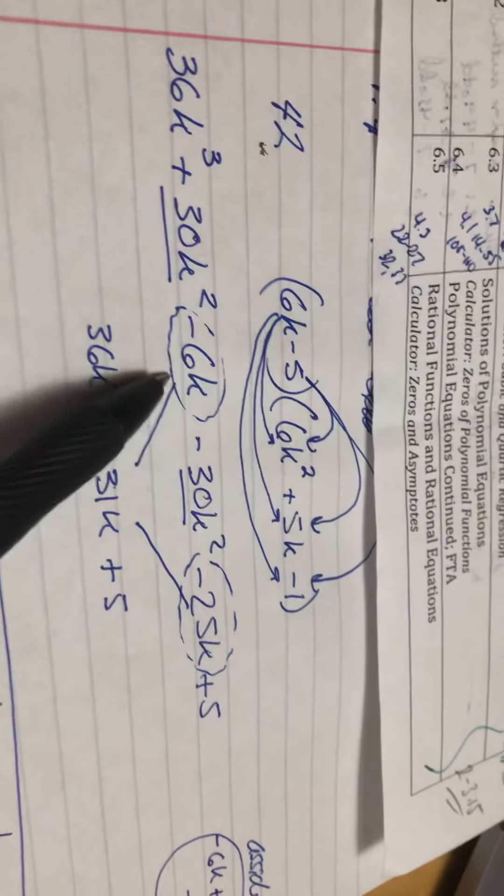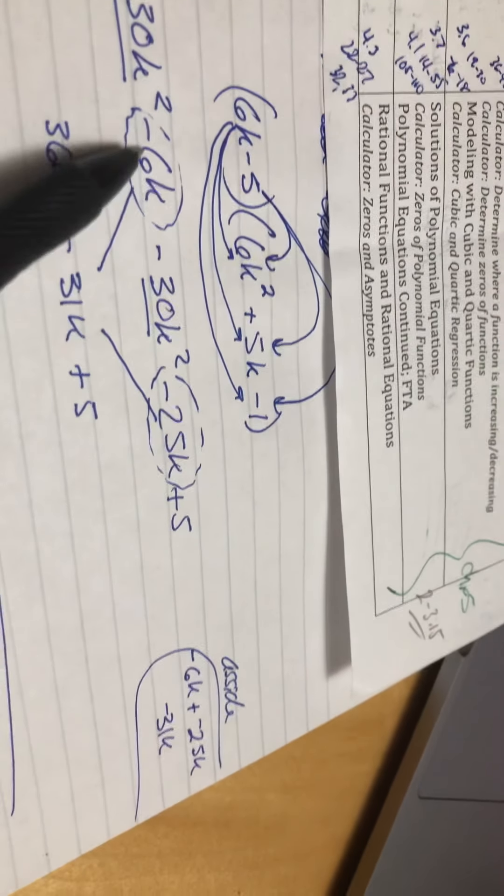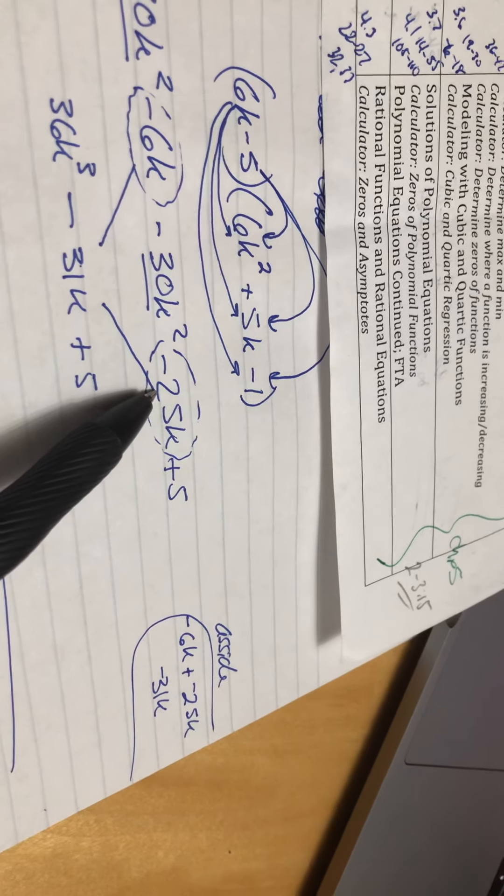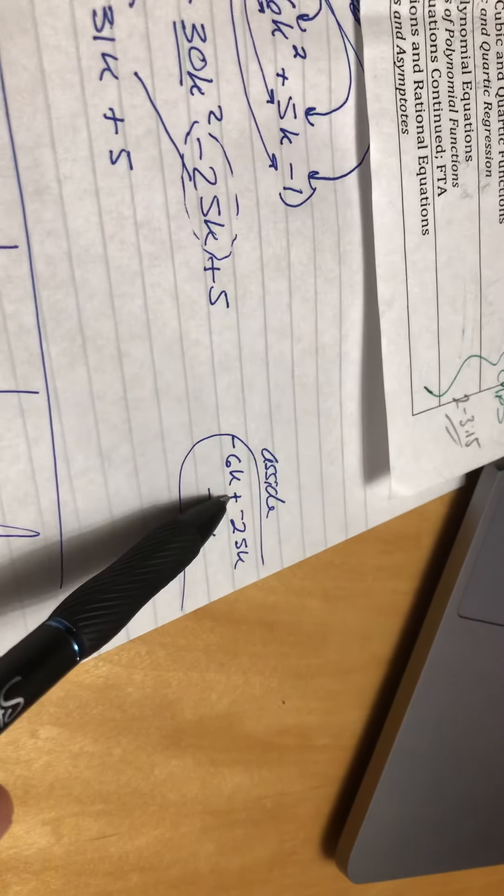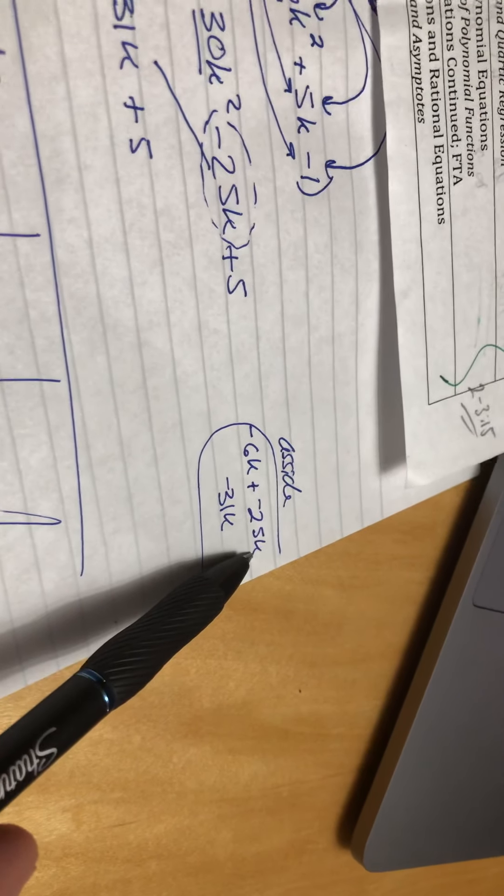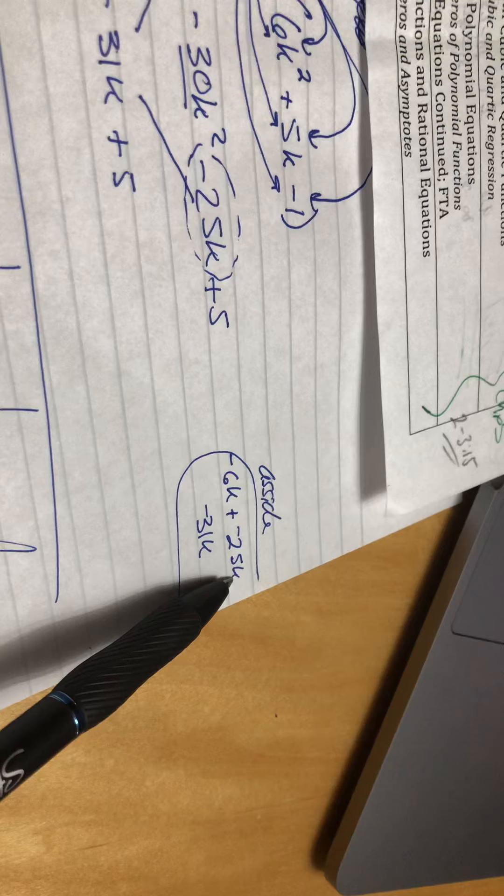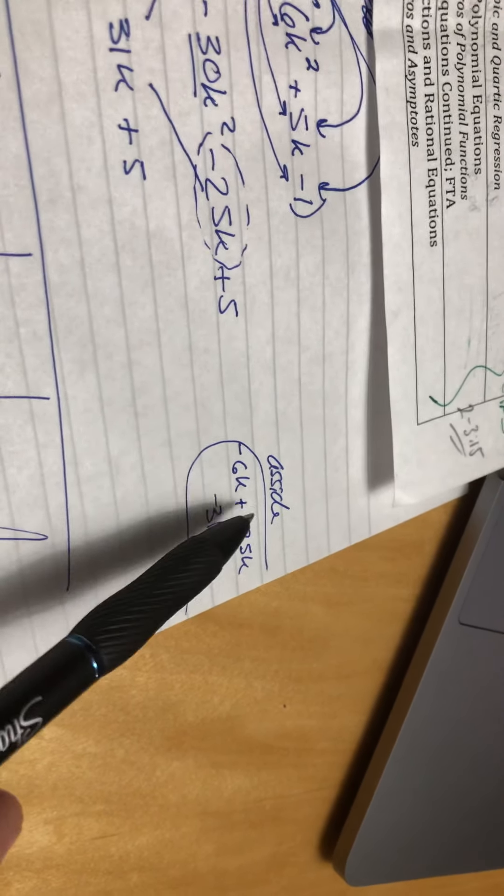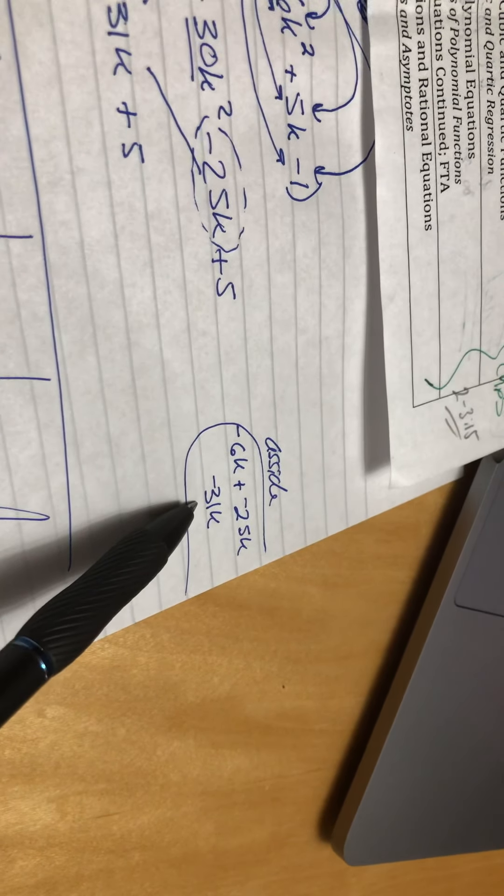Now just a real quick aside. If we take like terms like the negative 6k and the negative 25k, what you're really doing is you're reading it as negative 6k plus negative 25k. If you go back into your old algebra books, when you're adding terms that have the same signs, you add the numbers and then you keep the sign the same.